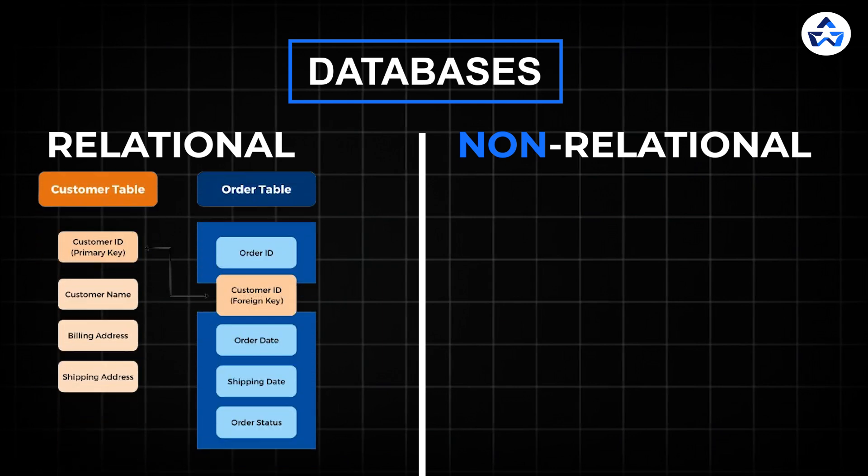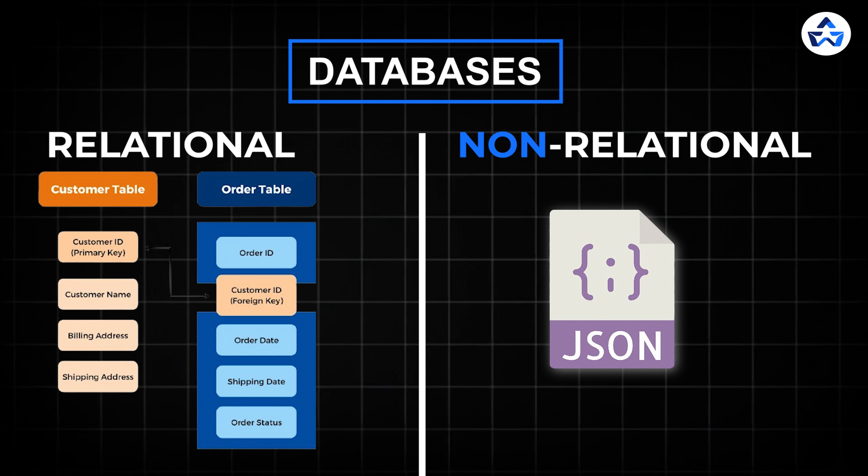A relational database helps us arrange data in the form of tables — that means in rows and columns. A non-relational database is more flexible, allowing data to be arranged in JSON format, which we call documents. To understand the difference: in banking, like State Bank of India, you need data very rapidly when a transaction occurs — you get a message that an amount was credited or debited. This requires very fast data manipulation, so a structured relational database stored in rows and columns is ideal, making it easy to fetch that data.